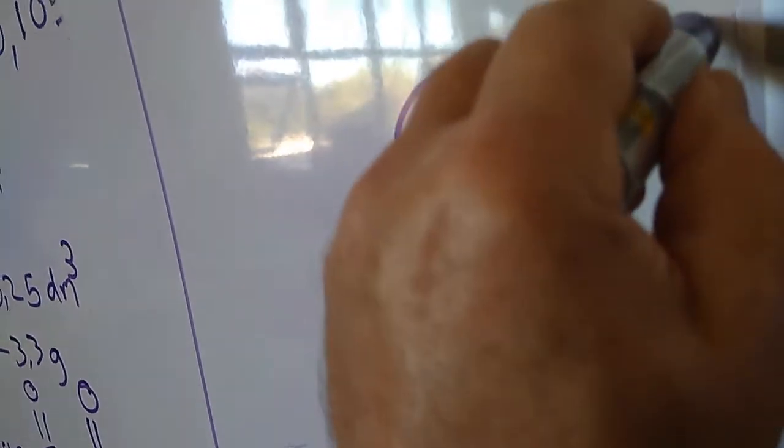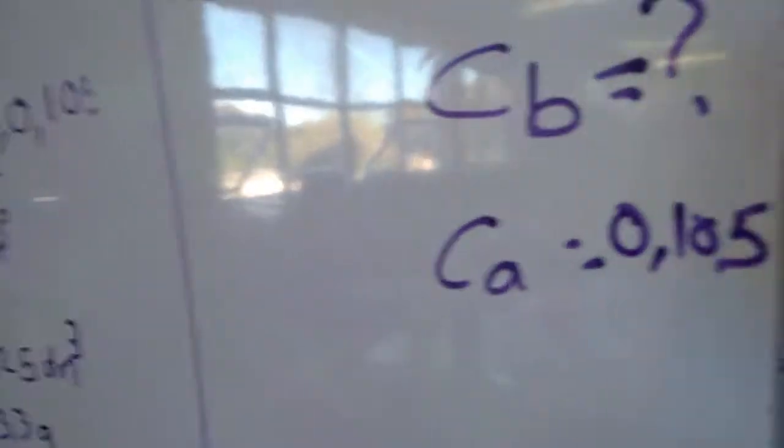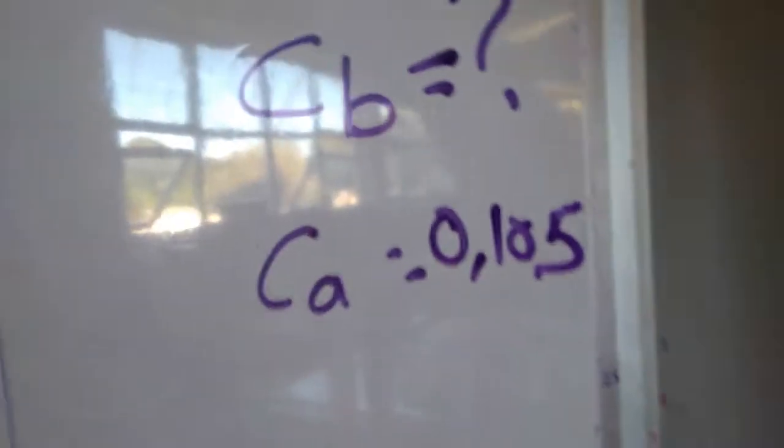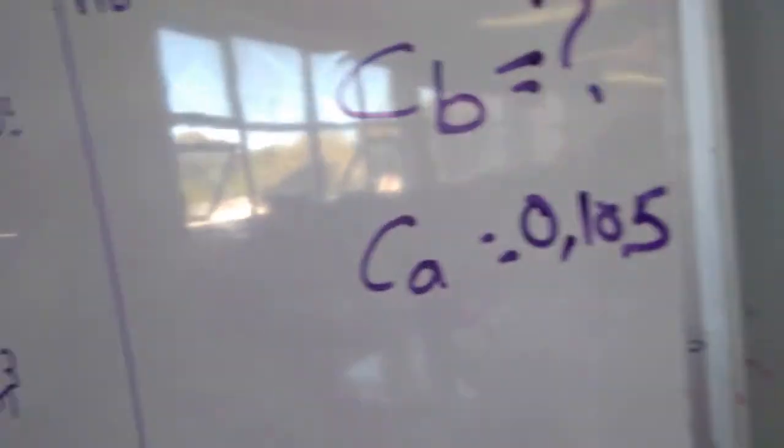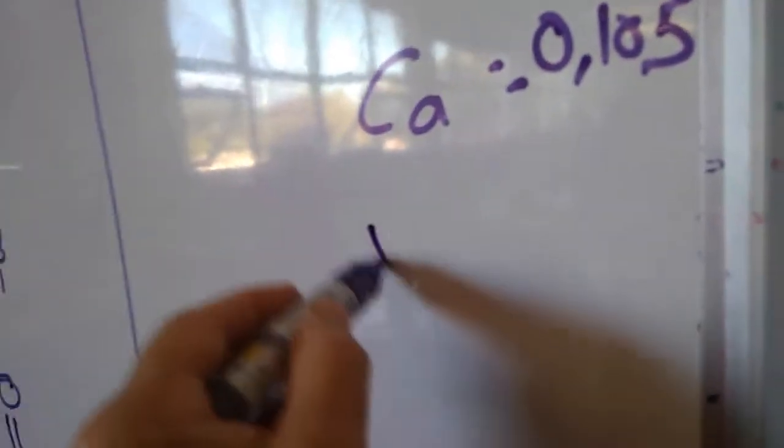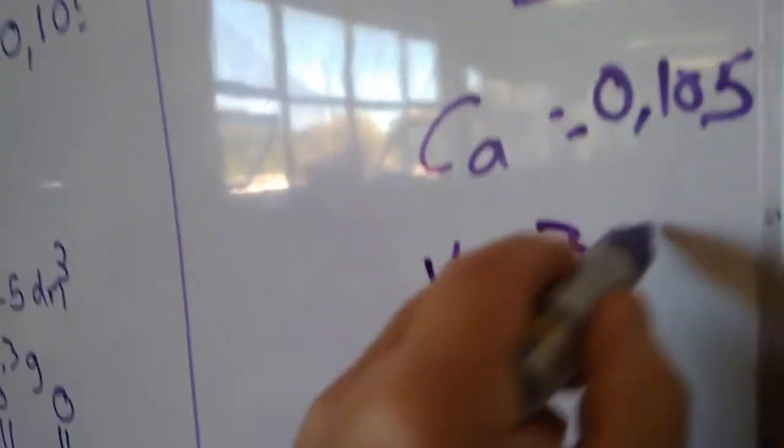Do we know the volume of the acid? Yes. Volume of the acid equals 38.7. And what was the volume of the base? 25.